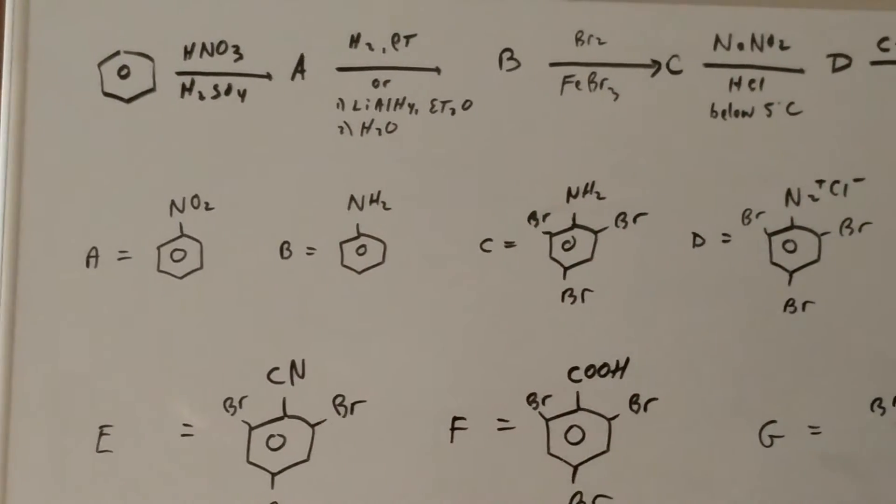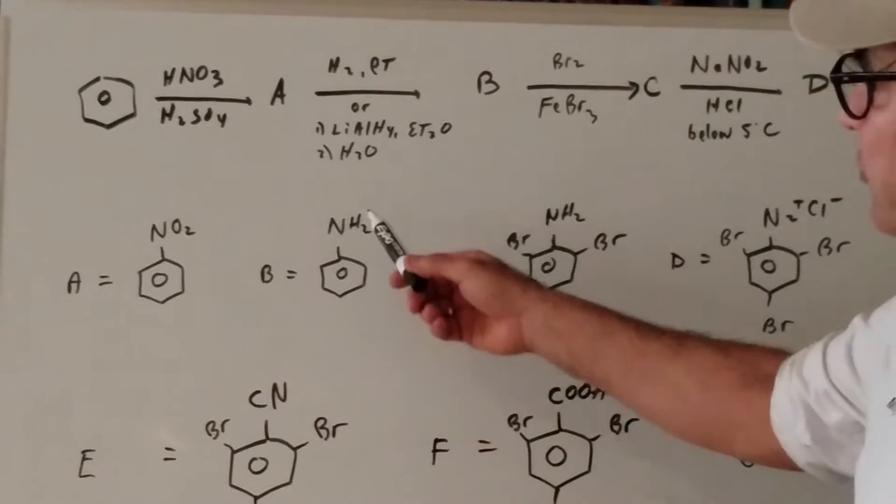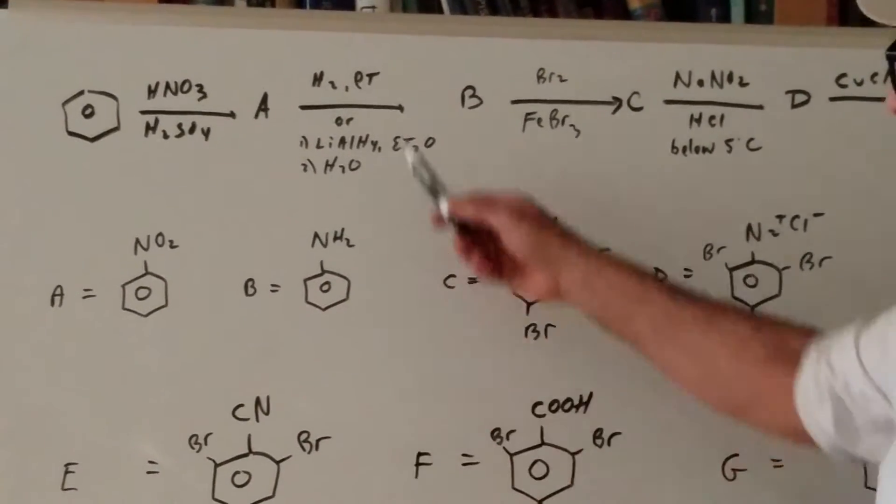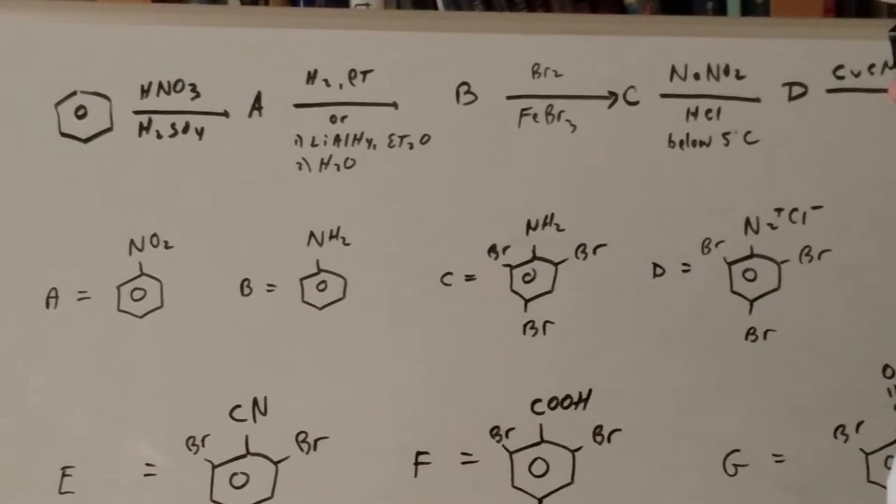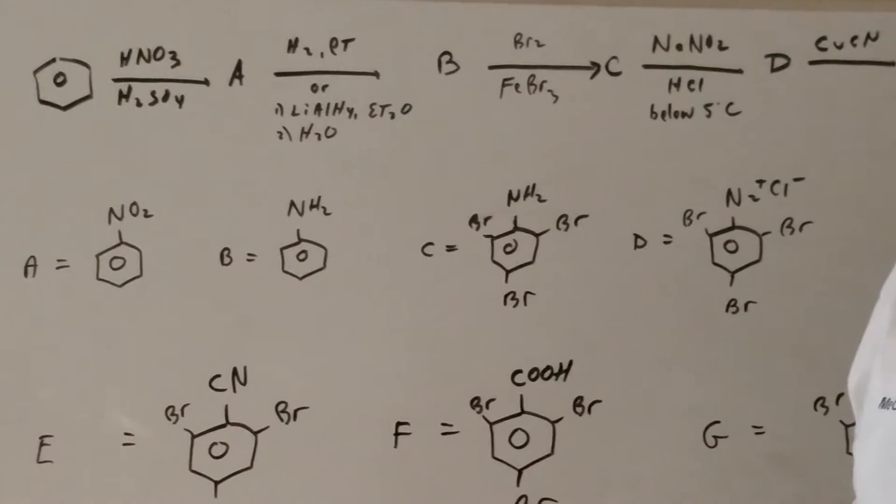From A to B, we're simply going to reduce down the nitro group into the amino group. I use hydrogen and platinum, or I use lithium aluminum hydride to do the job. You can also use tin or iron with acid like I do sometimes in the destroyer. So there's three main ways to do that.